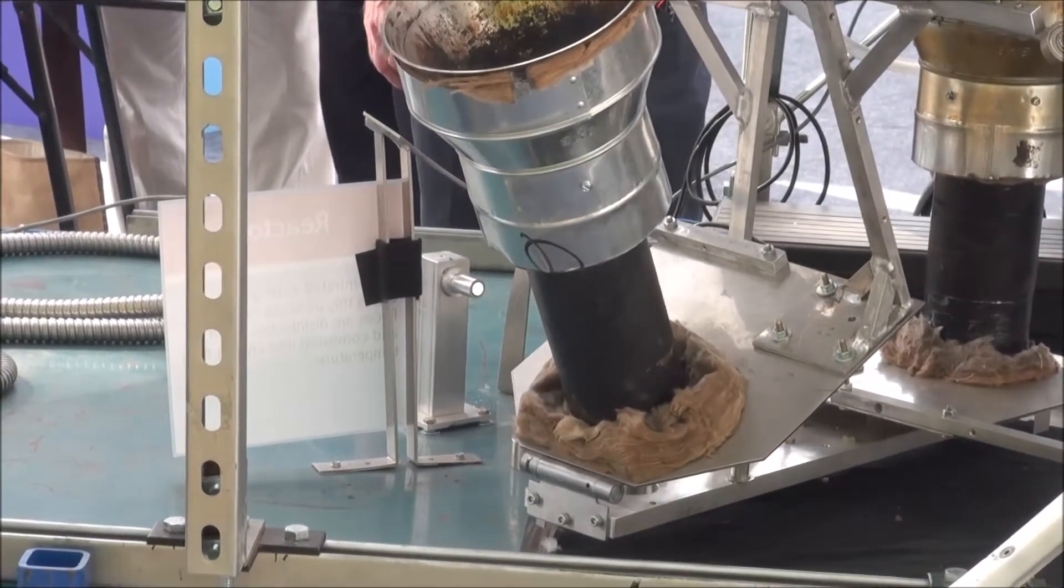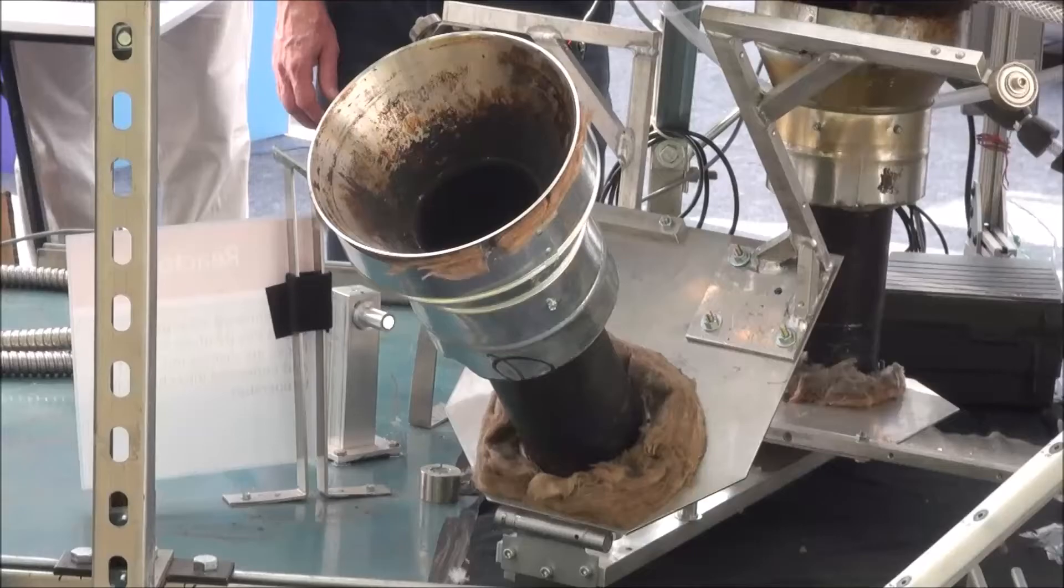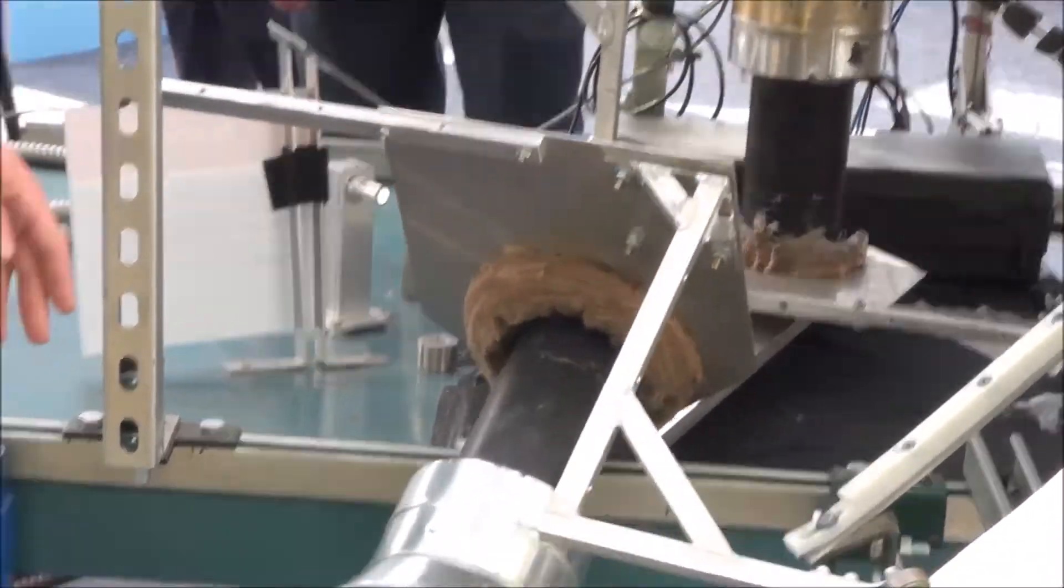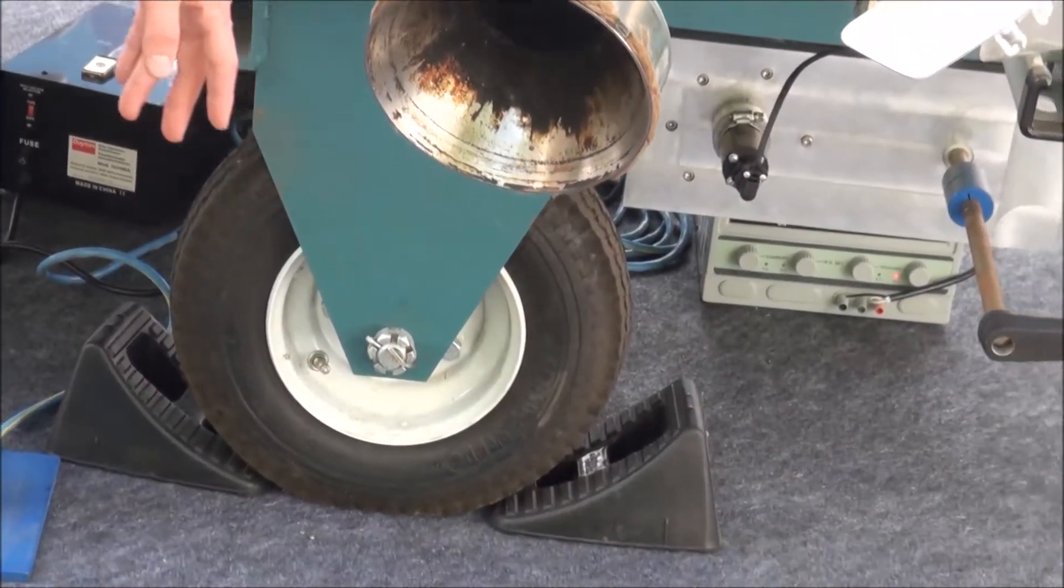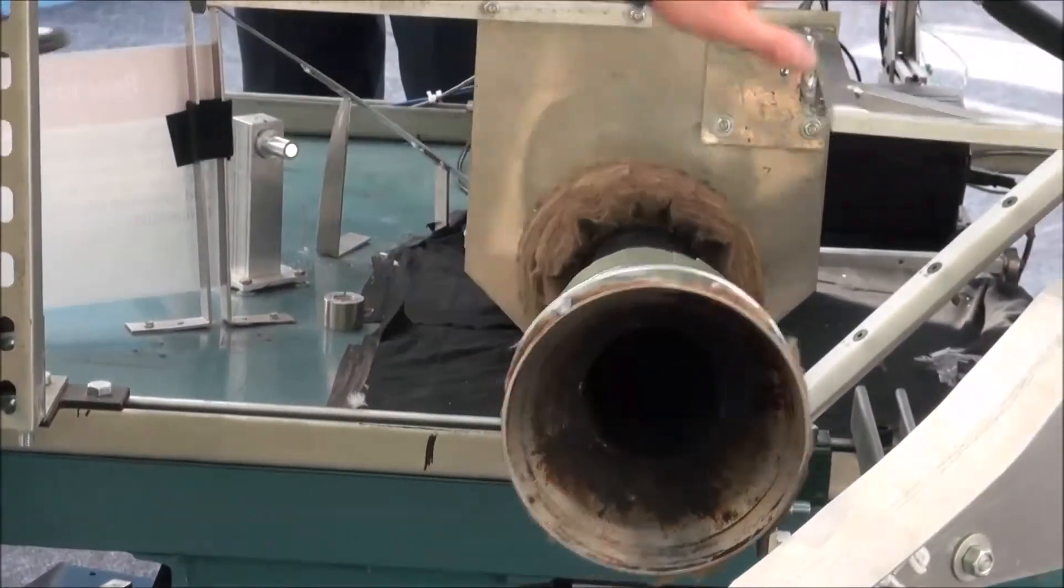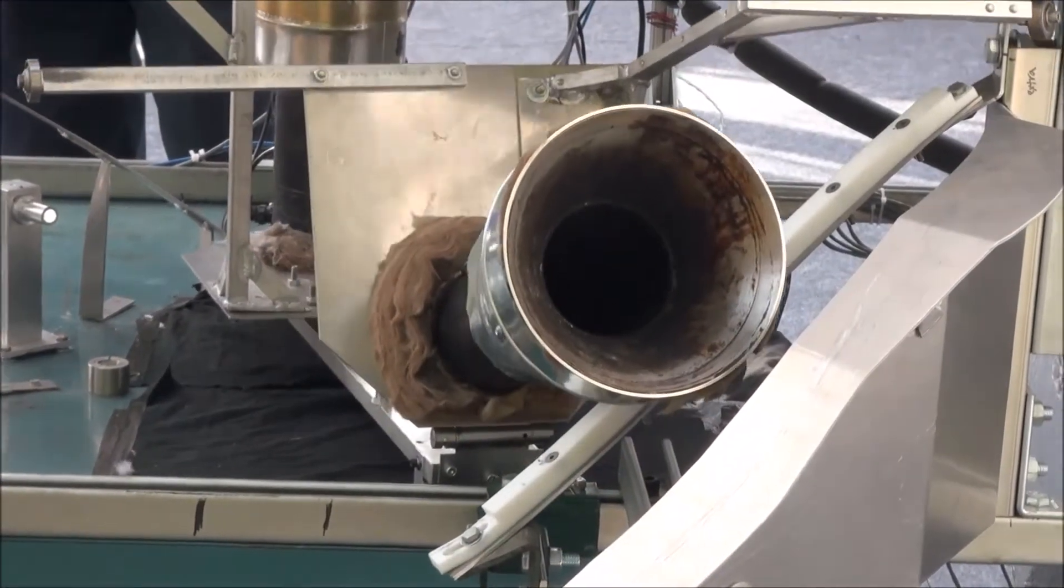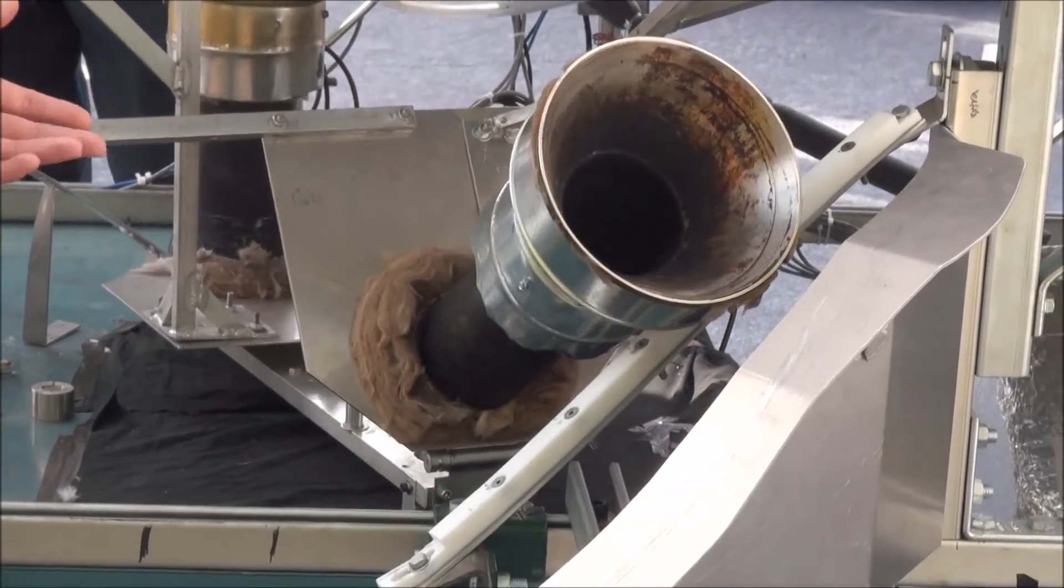We have a cam lever arm with a wheel that rides up this ramp and dumps the vessel over, knocking out any char that's inside after pyrolysis. Then another ramp flips it back over into the proper collection orientation.